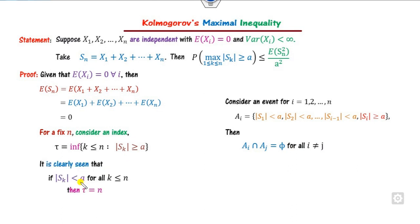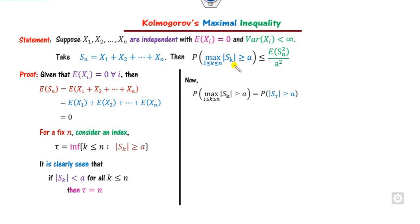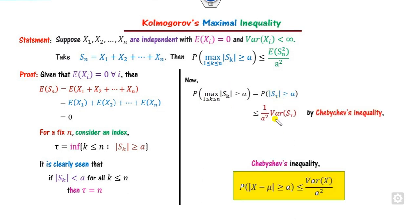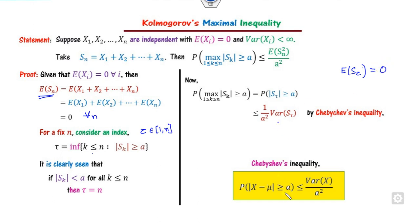When S_k < a for all k, then τ = S_n, meaning τ is just the index satisfying the requirement. We apply the Chebyshev inequality here, replacing X with S_τ. The mean μ = E[S_τ]. Since we proved E[S_n] = 0 for all n, and τ lies between 1 and n, E[S_τ] is also zero. So we can apply the Chebyshev inequality, and we open the variance of S_τ. Since E[S_τ] = 0, Var(S_τ) = E[S_τ²].